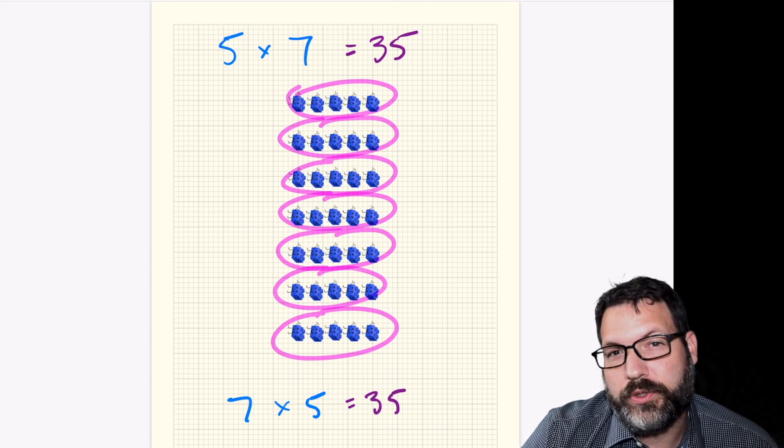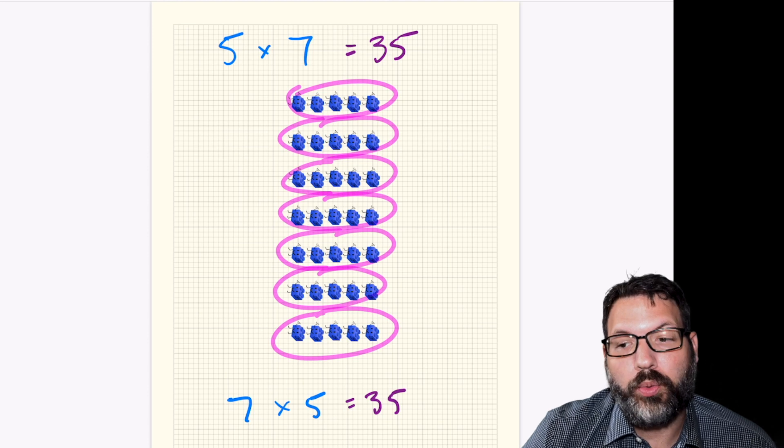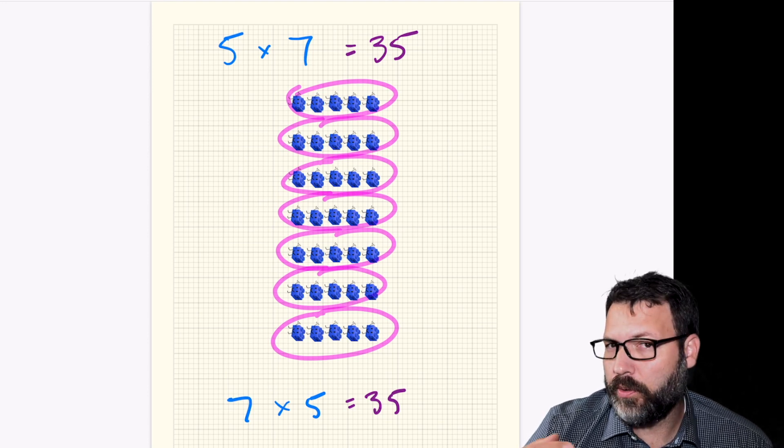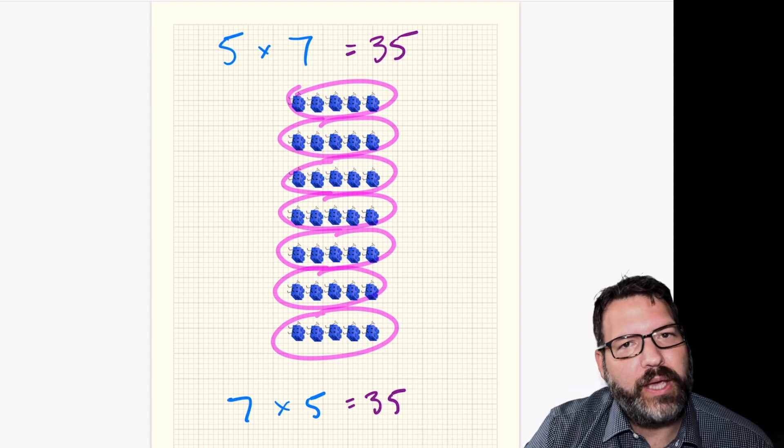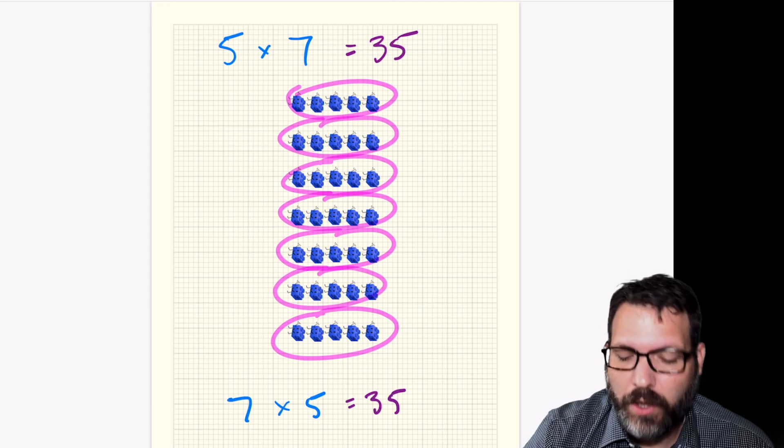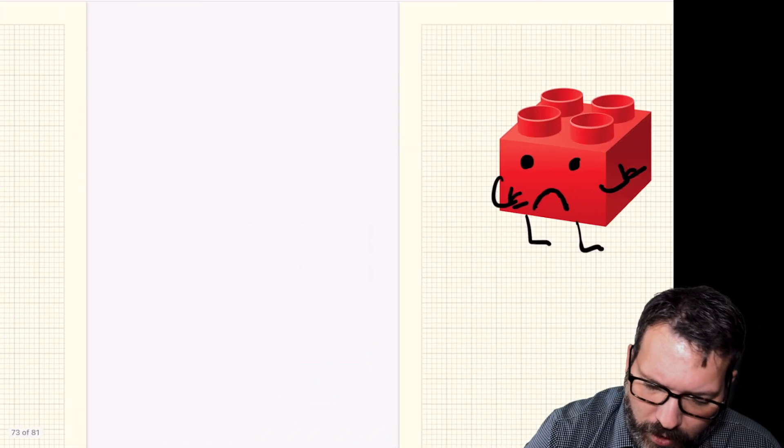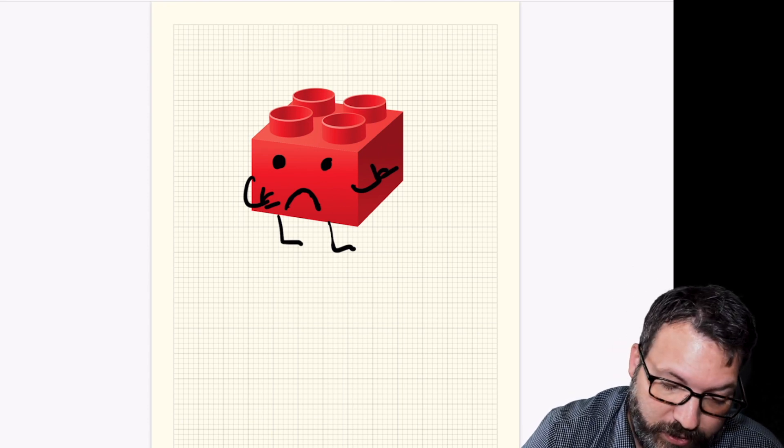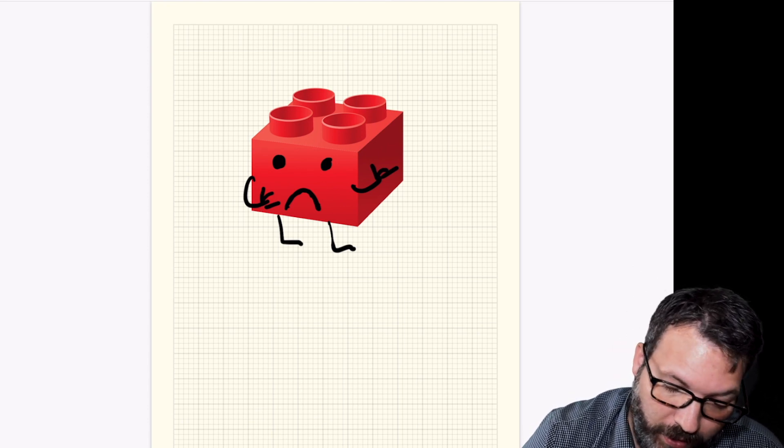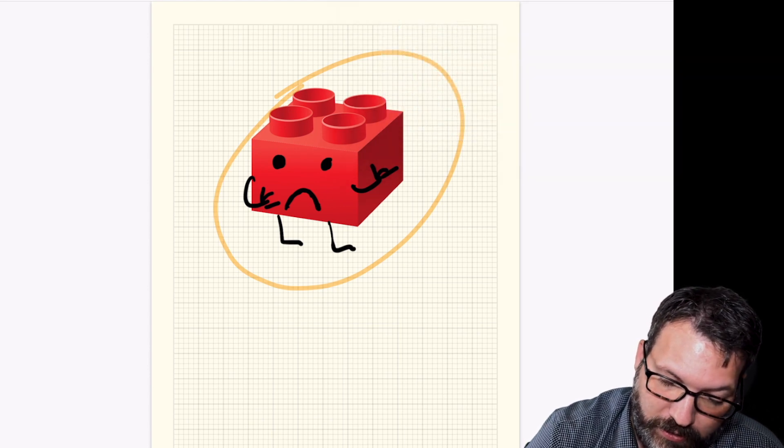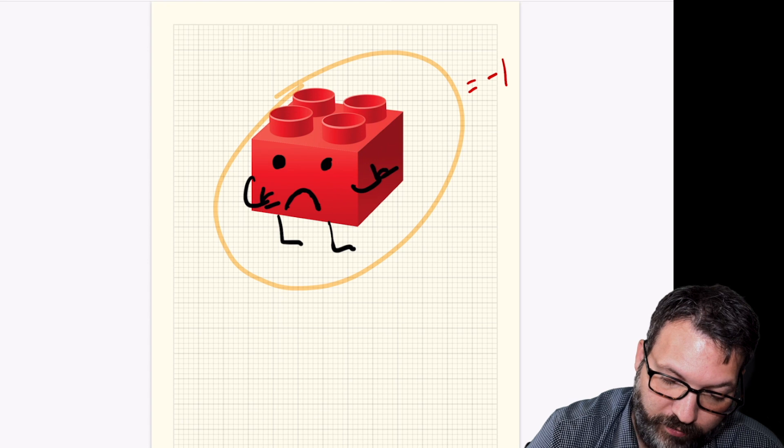What if we don't want to use the counting numbers, though? Or what if we want to count backwards, 5, 4, 3, 2, 1, 0, negative 1, right? How do we get into those numbers to the left of zero on the number line? Well, we need a new friend, and a new friend's name is bad guy. Bad guy works similarly to good guy, but instead of standing for positive one, bad guy stands, unsurprisingly, for negative one.